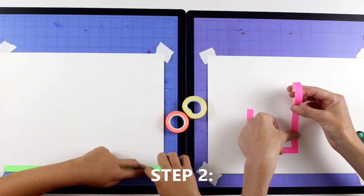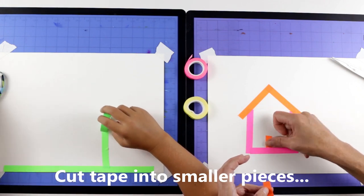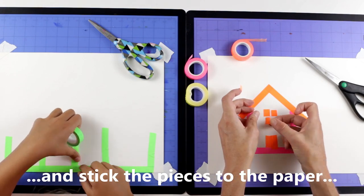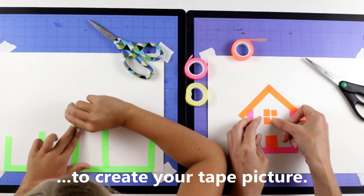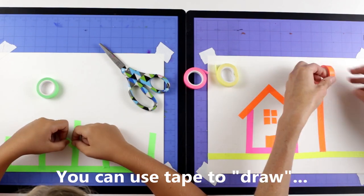And step two is to cut tape into pieces with your scissors and stick the pieces to the paper to create your tape picture or design.